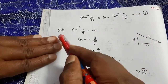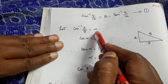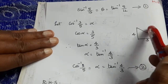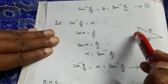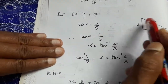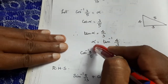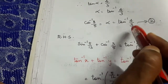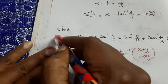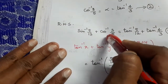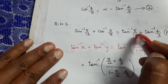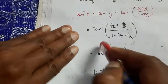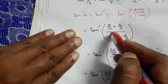Let α = cos⁻¹(3/5), so cos α = 3/5. Adjacent = 3, hypotenuse = 5. Opposite = √(5² − 3²) = 4. So tan α = 4/3, giving cos⁻¹(3/5) = tan⁻¹(4/3). RHS = sin⁻¹(5/13) + cos⁻¹(3/5) = tan⁻¹(5/12) + tan⁻¹(4/3). Using the addition formula: tan⁻¹((5/12 + 4/3) / (1 − (5/12)·(4/3))).